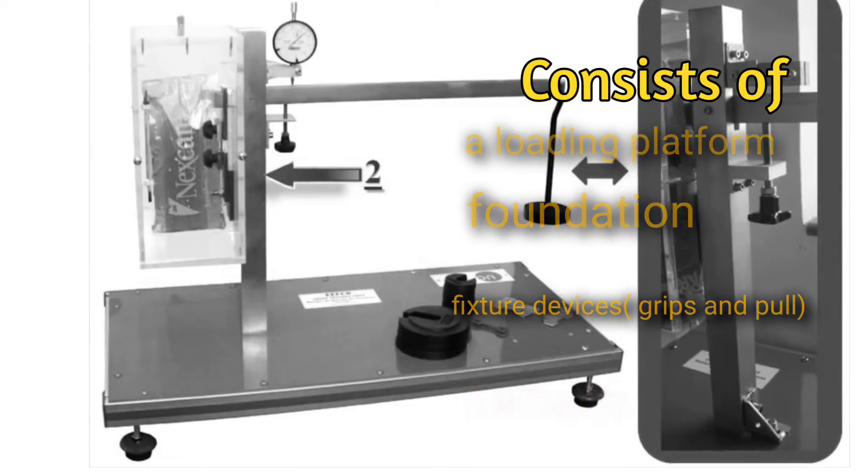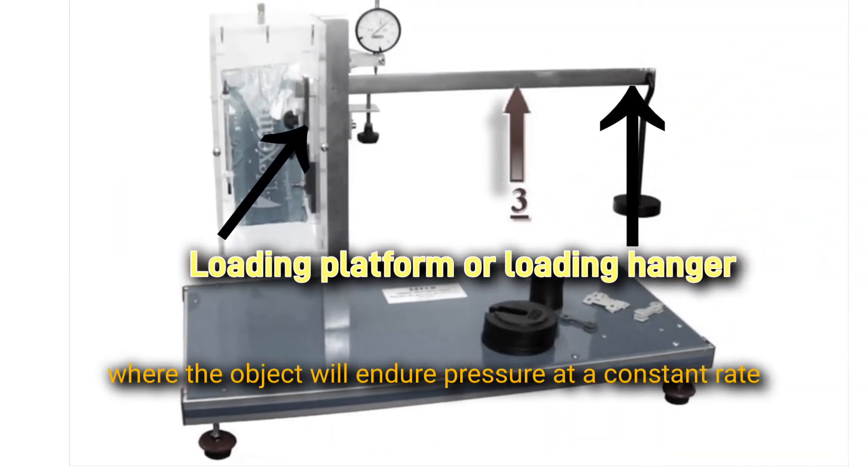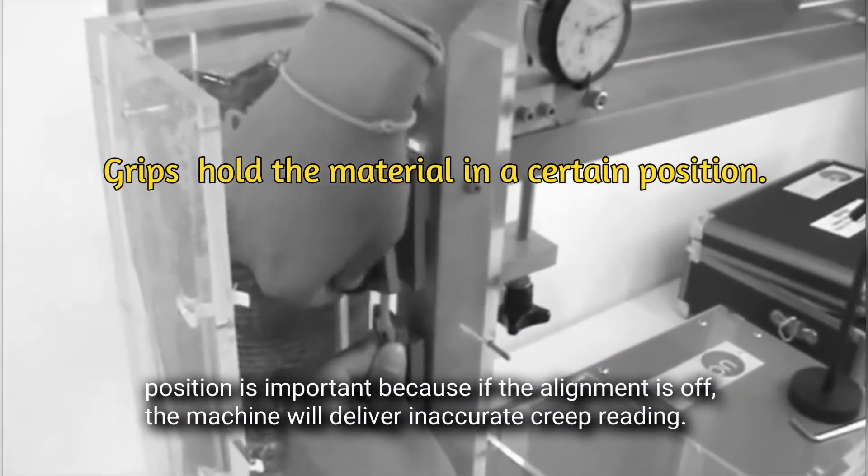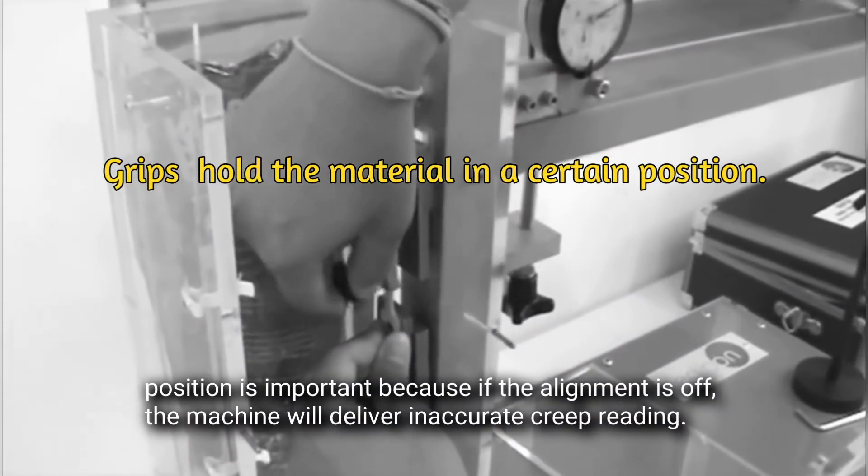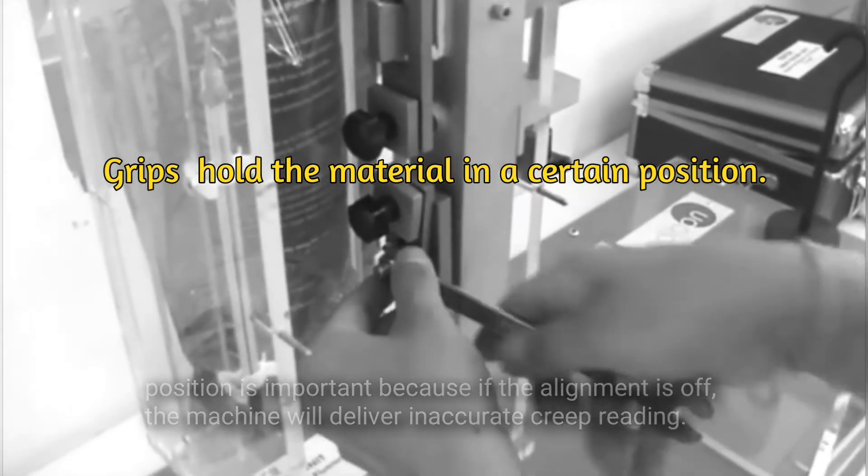The fixture devices are grips and pull rods. Loading platform or loading hanger is where the object will endure pressure at a constant rate. Grips hold the material in a certain position. Position is important because if the alignment is off, the machine will not deliver an accurate creep reading.